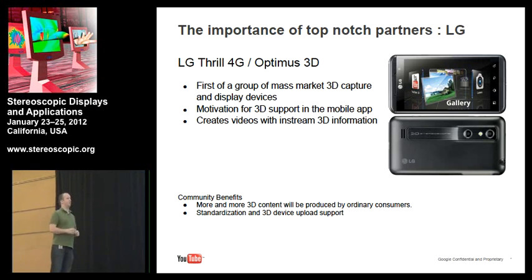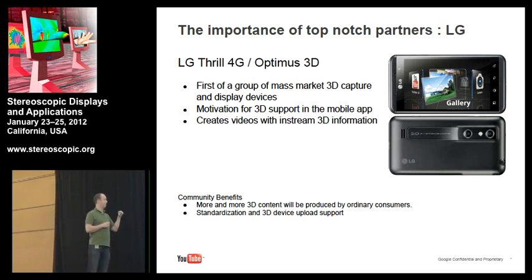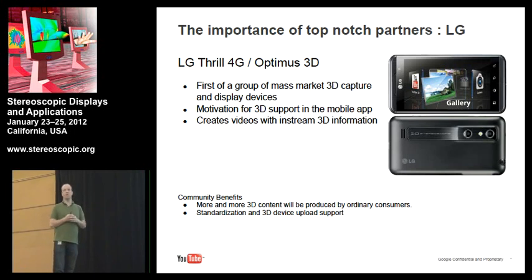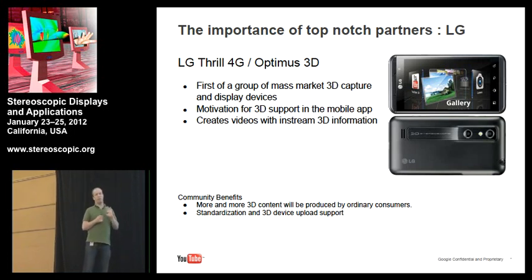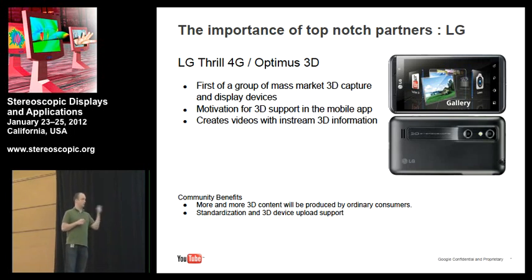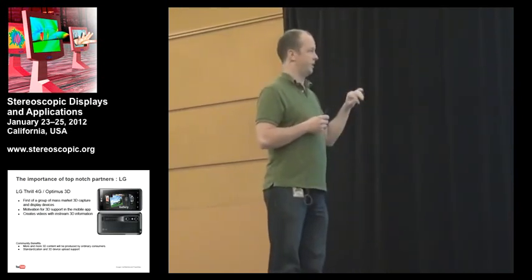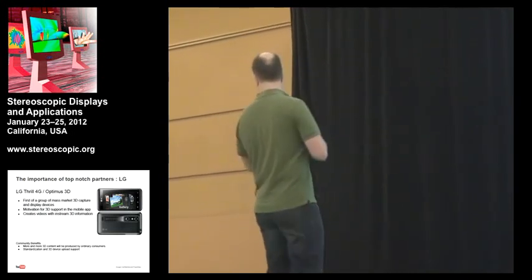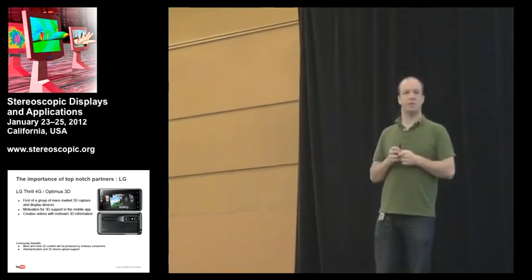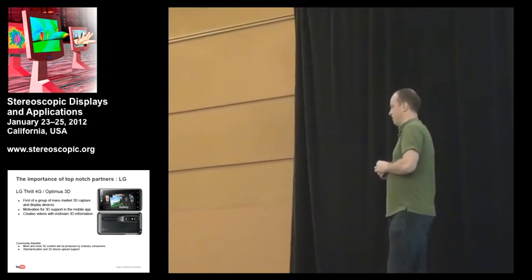This gave us the motivation to support 3D in the mobile app. It was nice to design something on a platform where you knew 3D was there. One of the issues with the web is that the penetration is still pretty small, so we have to be very careful about how much prominence we give to 3D so we don't confuse users. The benefits are that more and more 3D content is coming in, and 3D cameras are becoming less of a niche thing. This also led us to work towards standardization and supporting upload of 3D content, because with a hardware solution — especially mobile — we want everything to be super automatic.